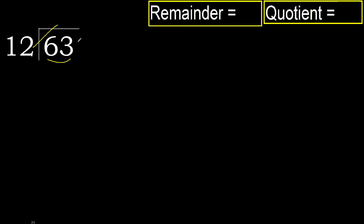...72 is greater. 12 multiplied by 5 is 60. 60 is not greater, ok.